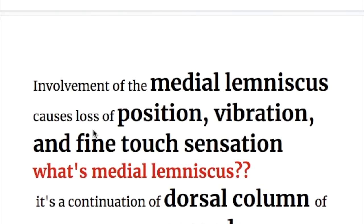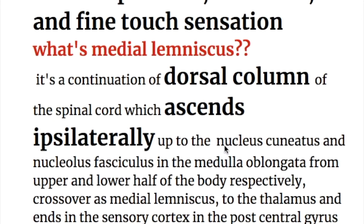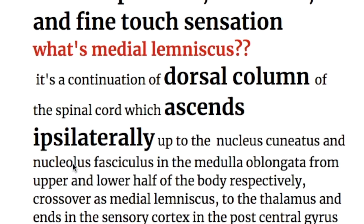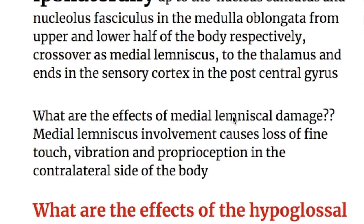Involvement of the medial lemniscus causes loss of position sense, vibration, and fine touch sensations. The medial lemniscus is the continuation of the dorsal column of the spinal cord, which ascends ipsilaterally to the nucleus cuneatus and nucleus gracilis in the medulla from the upper and lower half of the body respectively. These fibers cross over as the medial lemniscus to the thalamus and end in the sensory cortex at the post-central gyrus, causing contralateral loss of these sensations.